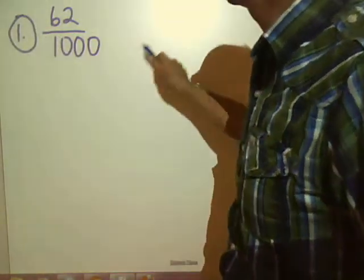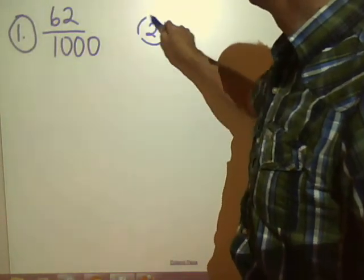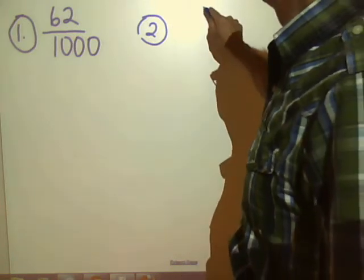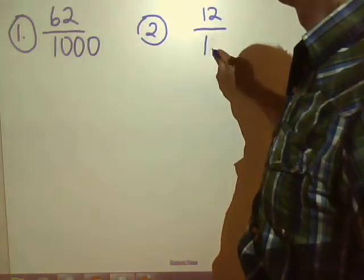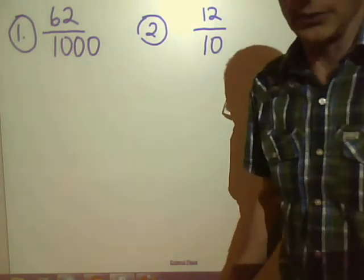Question number two is a trick question. You've got to regroup. You've got to regroup.